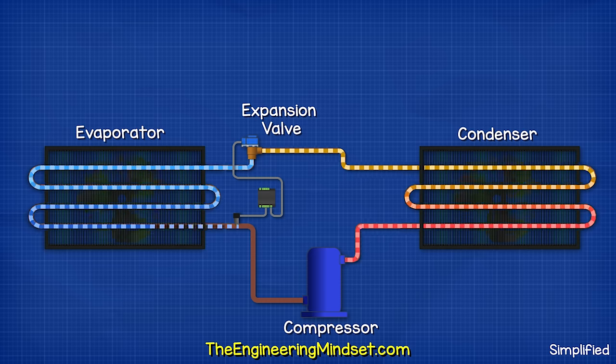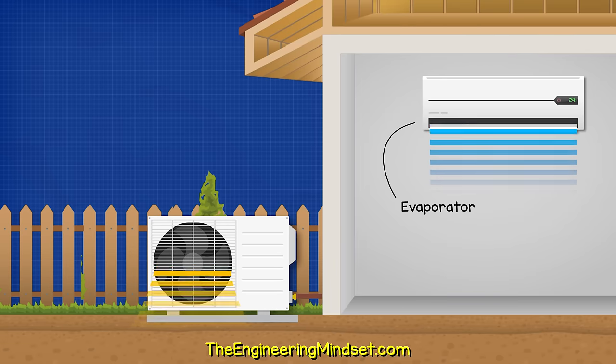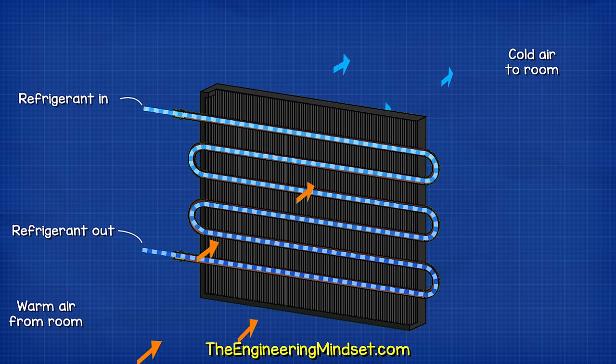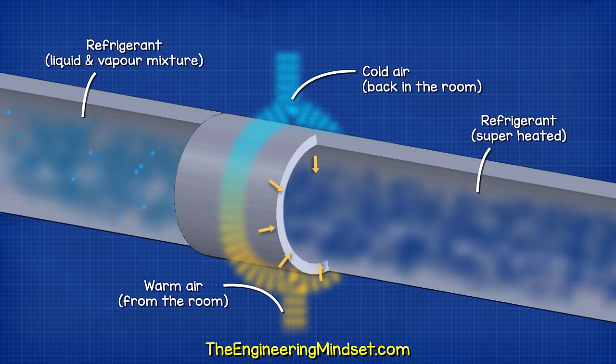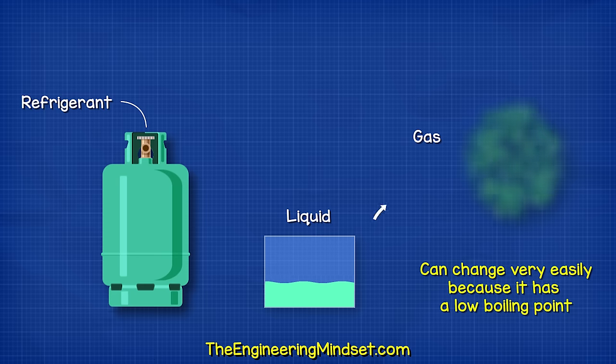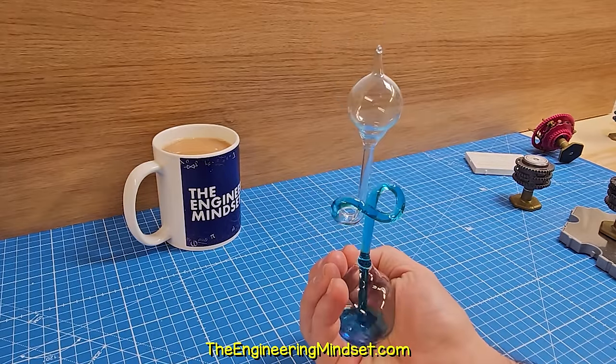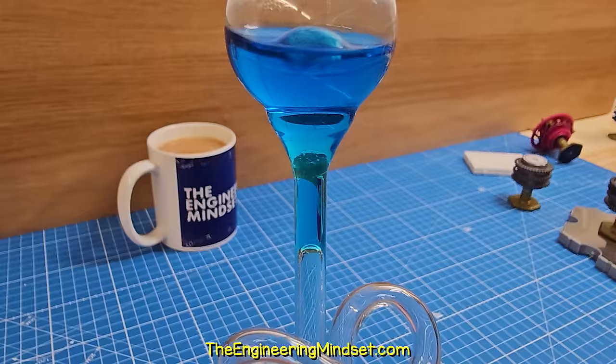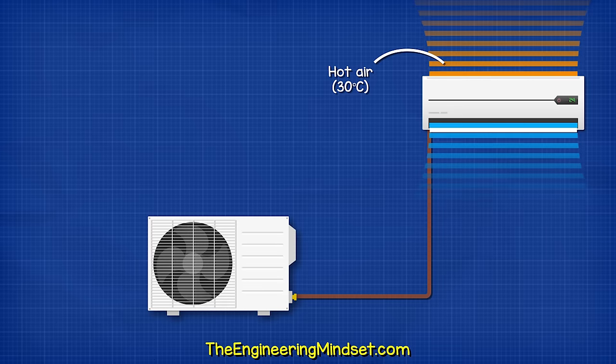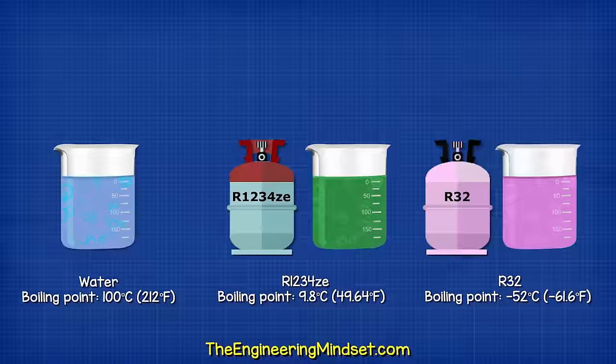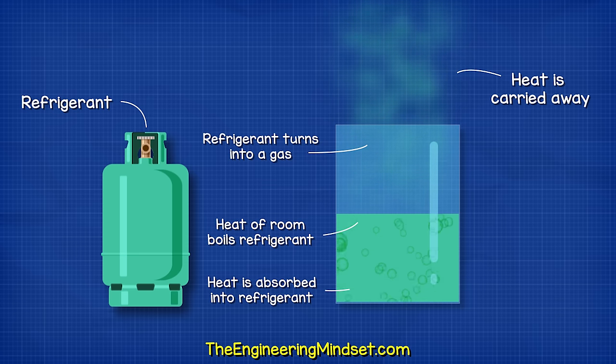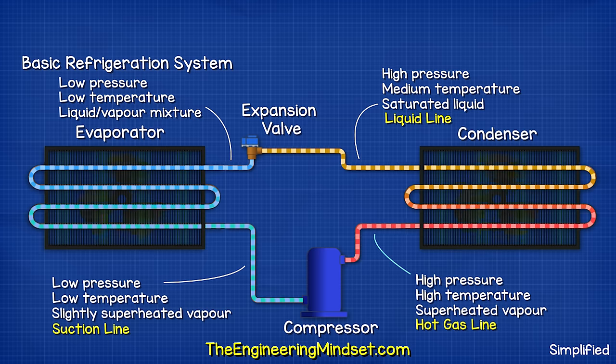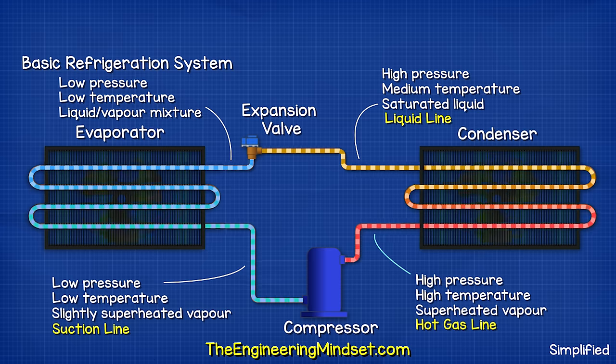This then flows into the evaporator, which is another heat exchanger inside the property. The refrigerant again flows through the tube, with the air of the room flowing over the tube. But this time, the thermal energy of the air is going to flow through the tube wall and into the low-pressure refrigerant. The low-pressure allows the refrigerant to boil very easily, just like this vessel filled with low-pressure refrigerant. My hand has enough thermal energy to cause it to boil. So, the heat of the room is enough to boil the refrigerant because it has a very low boiling point. The refrigerant turns into a gas and carries the unwanted heat of the room away. It exits as a low-pressure, low-temperature, slightly superheated vapor. The refrigerant is then sucked into the compressor to repeat this process.